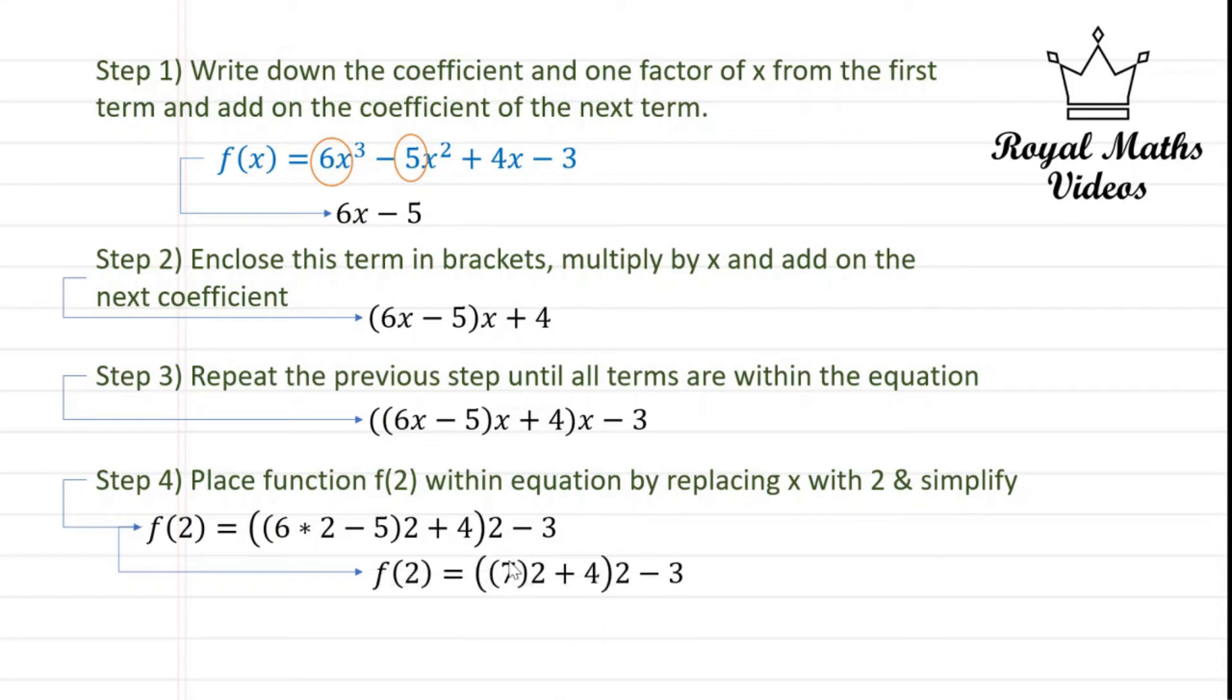So f(2) is equal to 7. That's 6 × 2, which is 12, minus 5, which is 7, times by 2 plus 4, and then all of that times by 2 again minus 3.